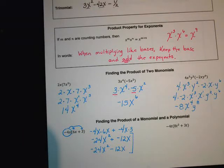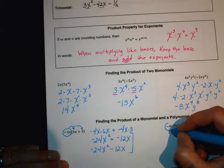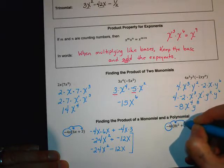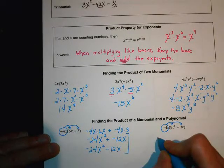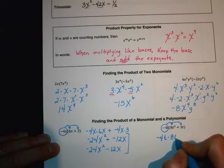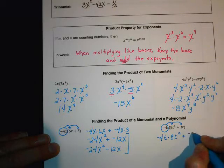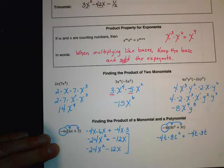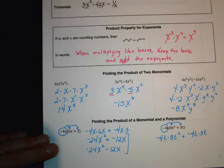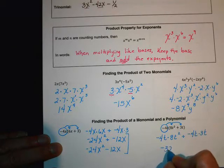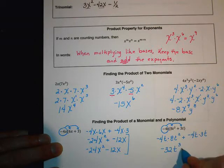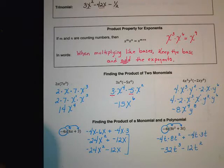Let's try another: take negative 4t and distribute it to each term. Put negative 4t in front of 8t² and in front of 3t. Negative 4 times 8 is negative 32, and t times t² gives t³. Then negative 4 times 3 is negative 12, giving negative 32t³ minus 12t².